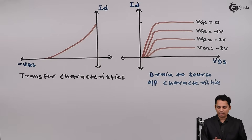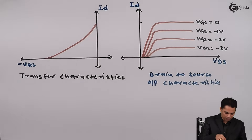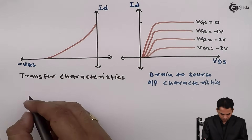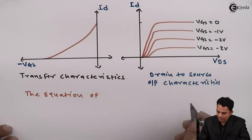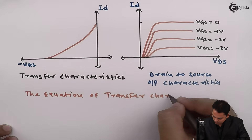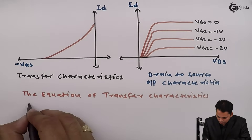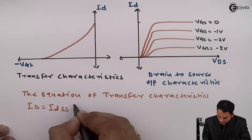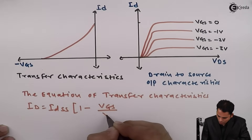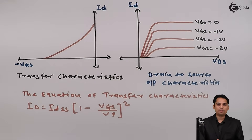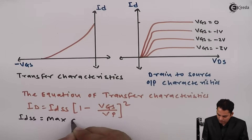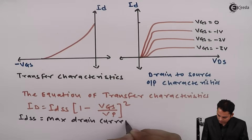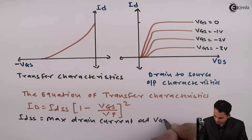These are the two characteristics of JFET: transfer characteristics and drain-to-source output characteristics. From the transfer characteristics, the equation can be written as ID equals IDSS into bracket 1 minus VGS upon VP, the whole squared. Here IDSS is equal to the maximum drain current.